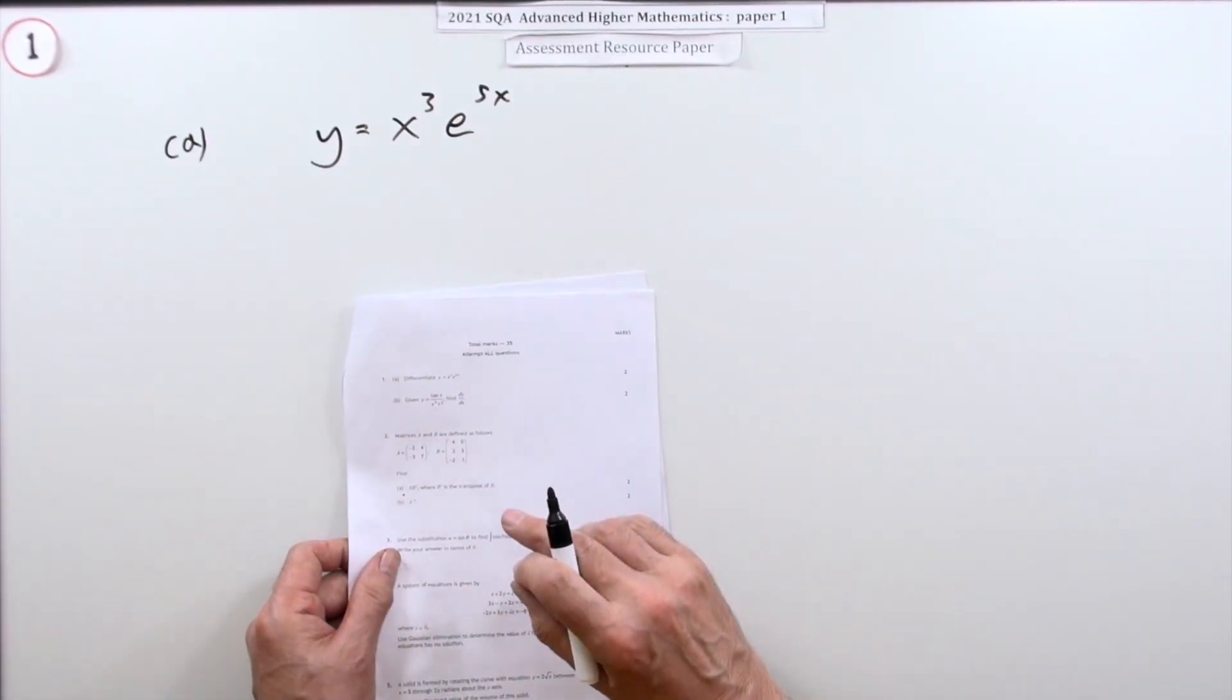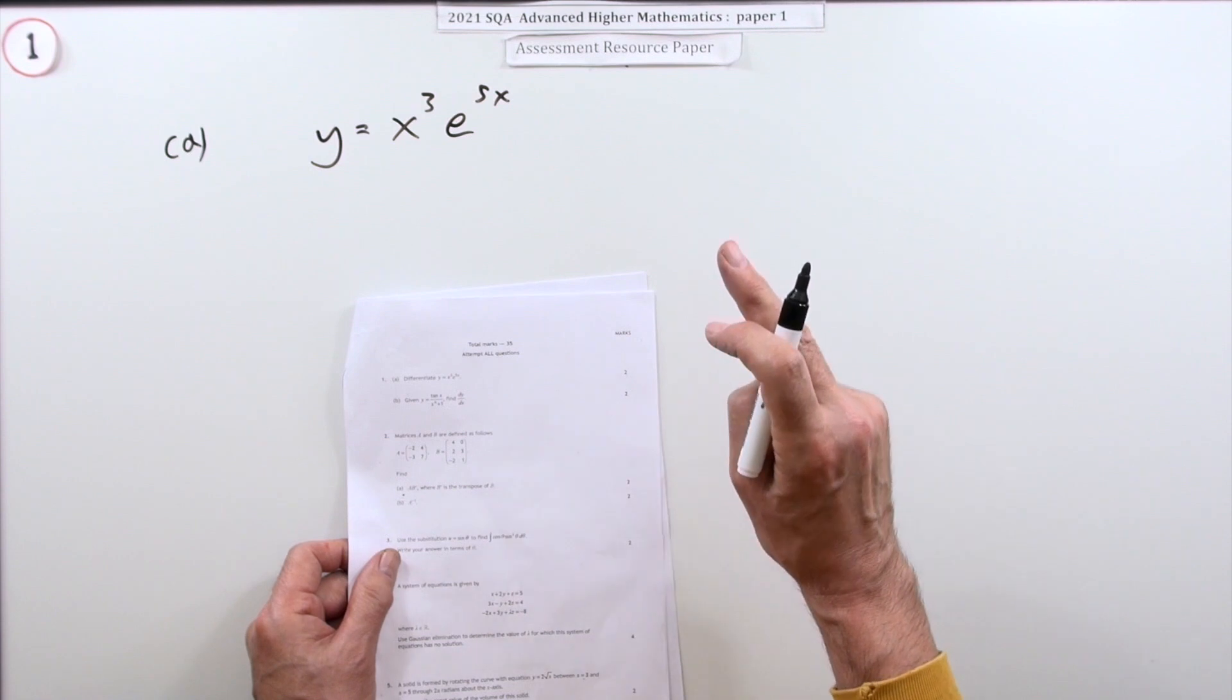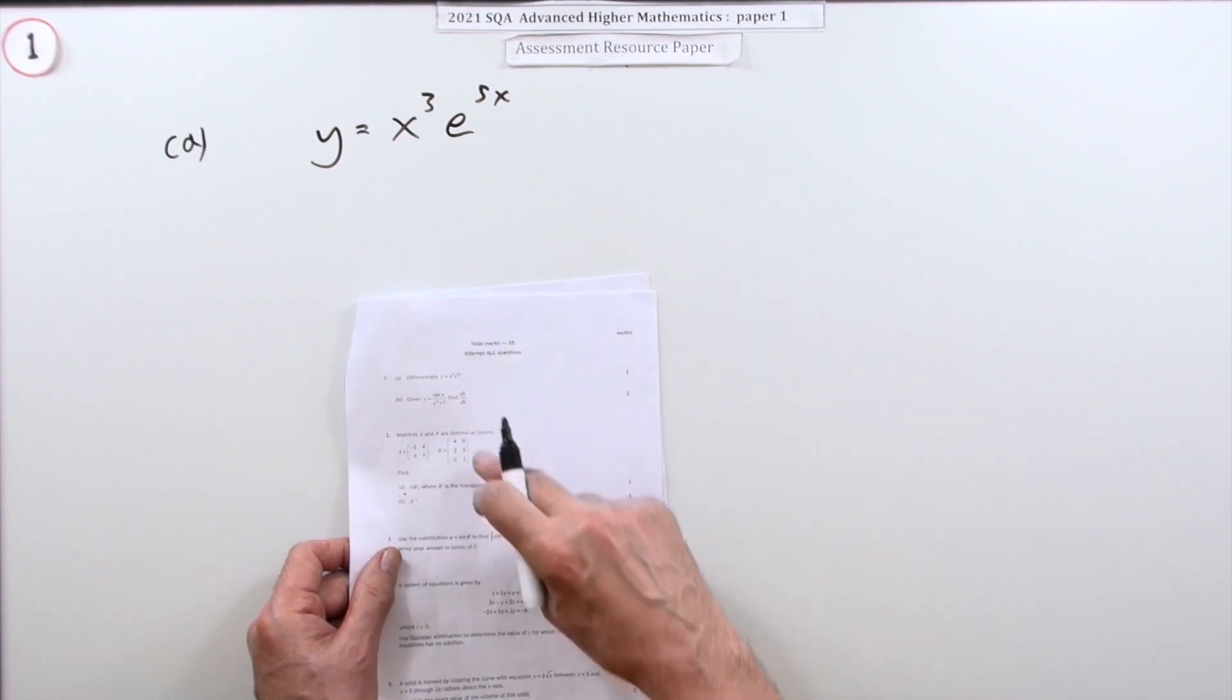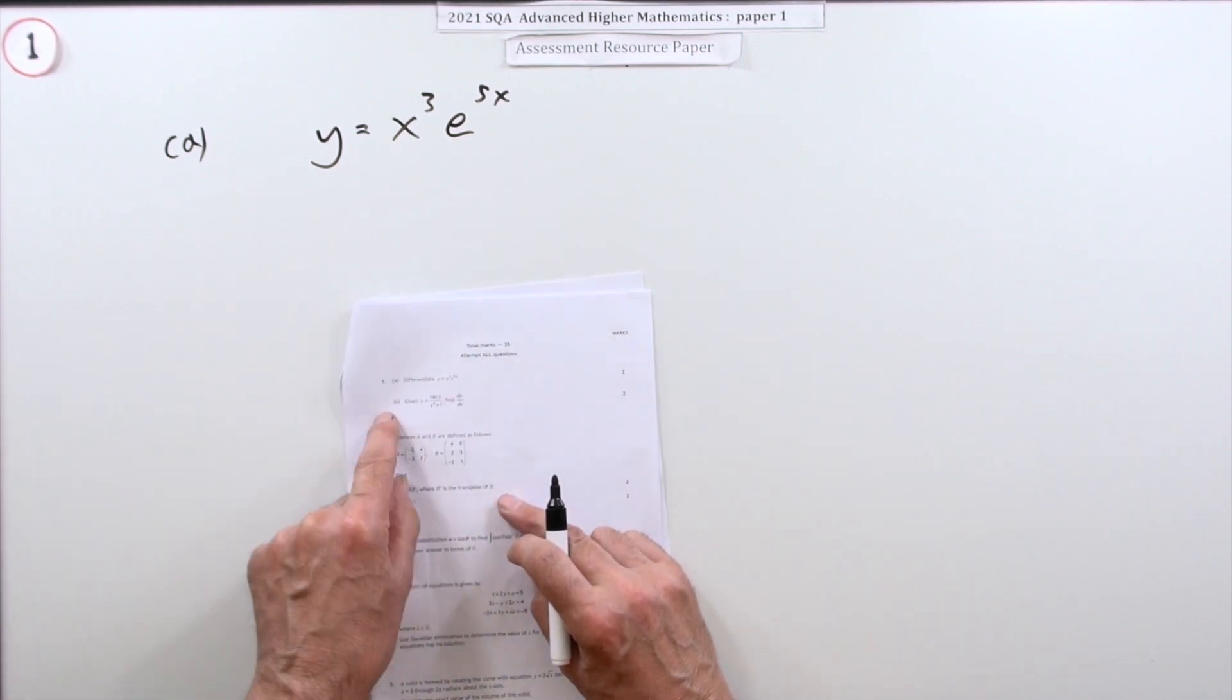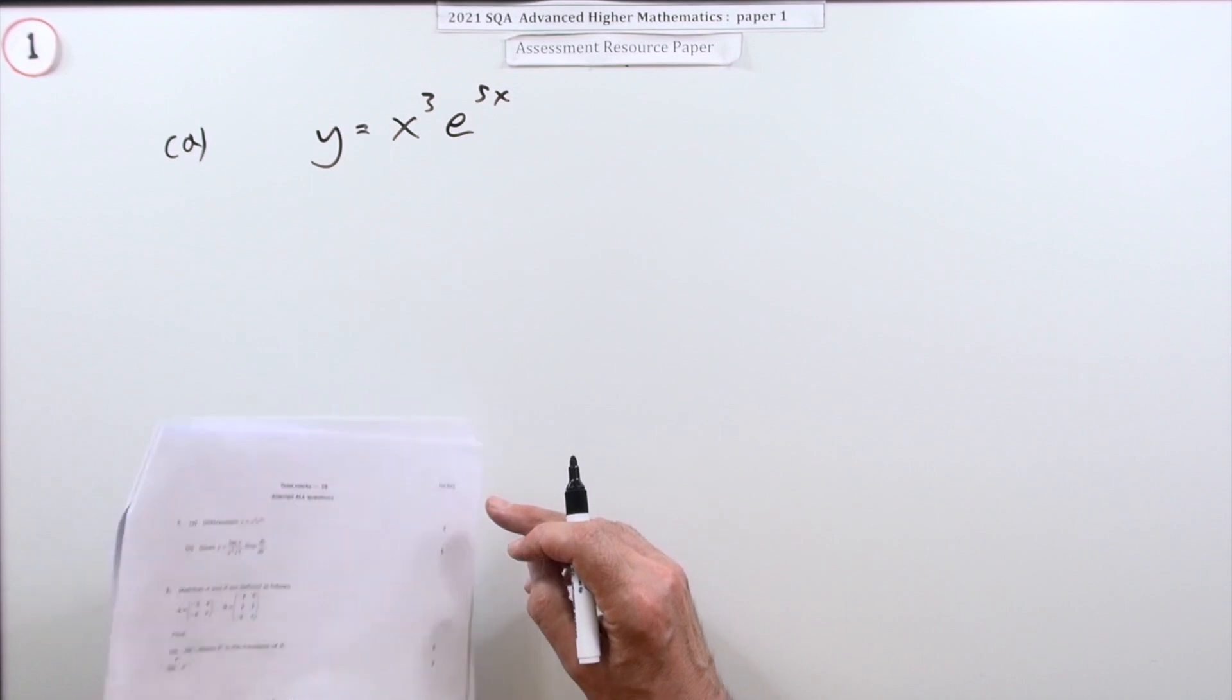Number one then, the first question in paper one of the 2021 Advanced Higher Maths paper. Just carry out some differentiations. In part A you've got a product so you're going to use the product rule, in part B you've got a quotient so you're going to use the quotient rule.